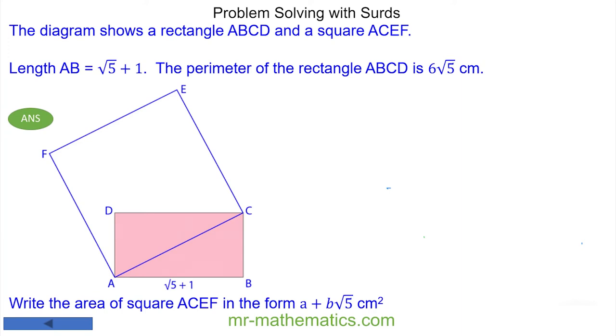Welcome to our problem solving question on surds. We've been asked to work out the area of a blue square, and to do this we're going to work out the length of AC, which is the hypotenuse of triangle ABC.